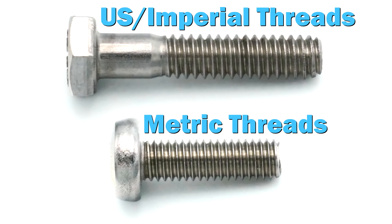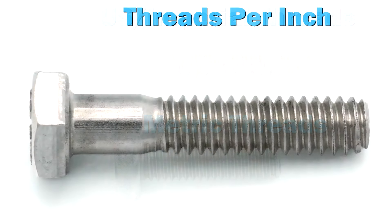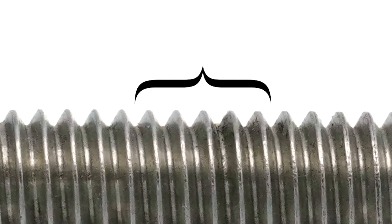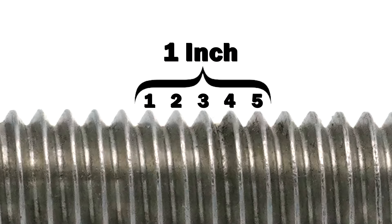I want to explain to you threads per inch US and metric thread pitch — they're two different things. With US threads per inch, it's how many threads are actually in one inch of the thread area. So when you measure one inch, like in this case here, you will see one, two, three, four, five in that one inch.